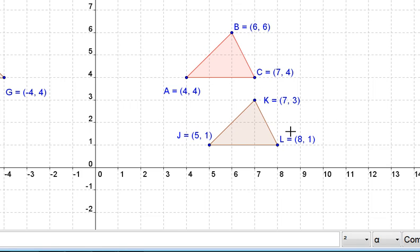We notice that each ordered pair, so A corresponds to J. The x-value is moved up by 1, and that's because we moved to the right by 1 unit. And the y-value is decreased by 3, and that's because we moved down by 3 units. And that same pattern holds for B and K, and C and L.